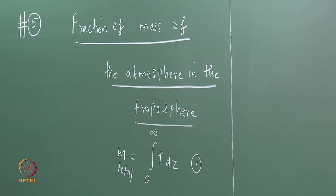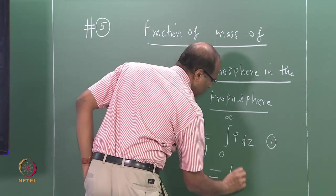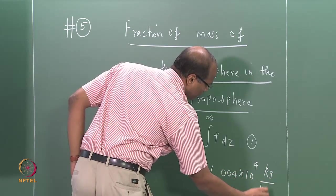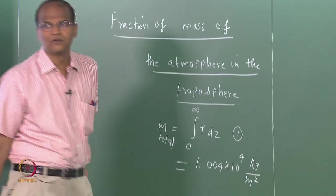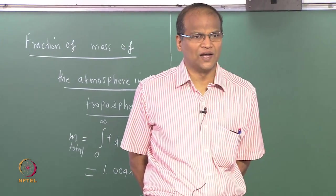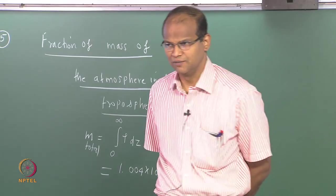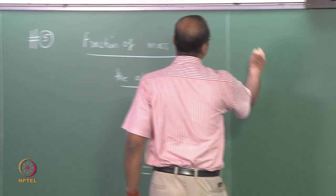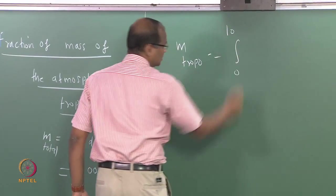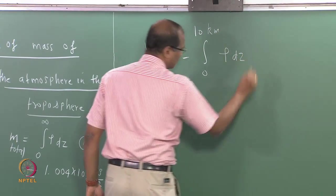This is the total mass of the atmosphere, which has a value equal to 1.004 × 10 kg per meter square. When multiplied by 4π Re², where Re is 6.37 × 10⁶ meters, we get approximately 5.11 × 10¹⁸ kg — that is the mass of the atmosphere. Now we want to find the mass from 0 to 10 kilometers.